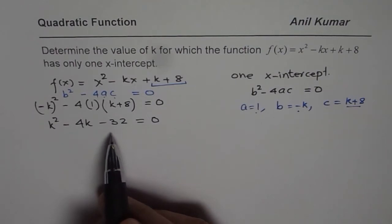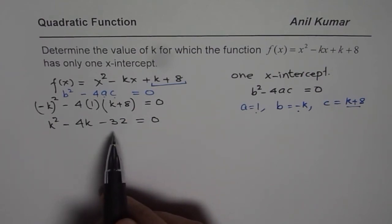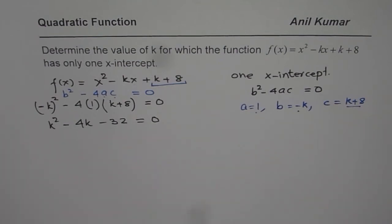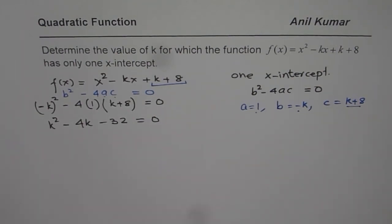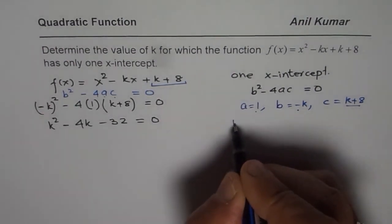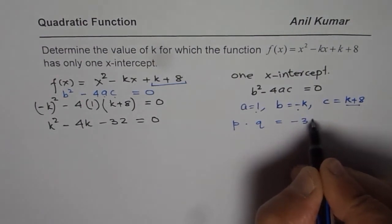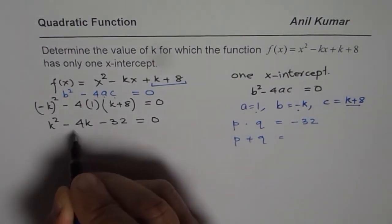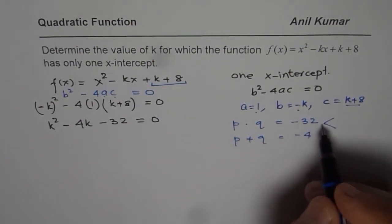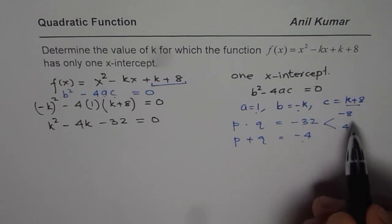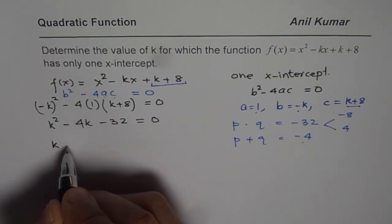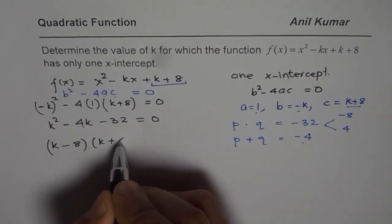Now we need to find when this equals 0. We could apply the quadratic formula or factor. To factor, we look for two numbers p and q whose product is -32 and whose sum is -4. Since 8 × 4 = 32, we take -8 and +4. So we write (k - 8)(k + 4) = 0.